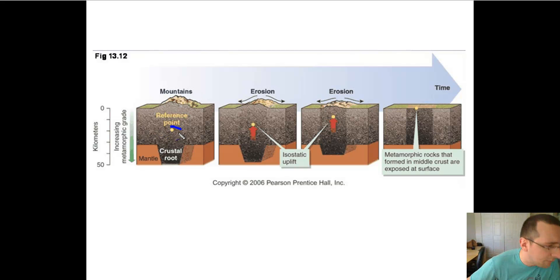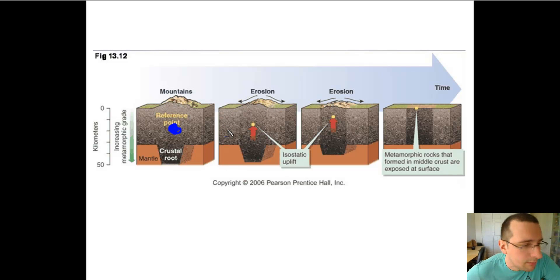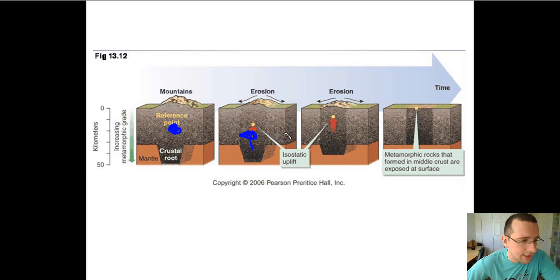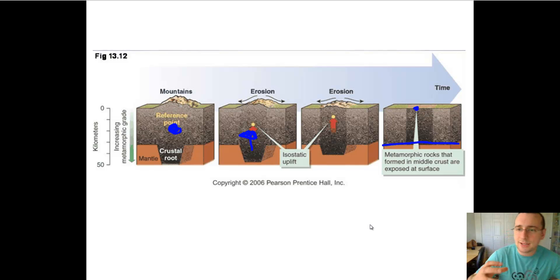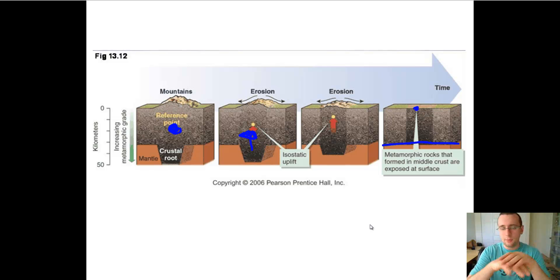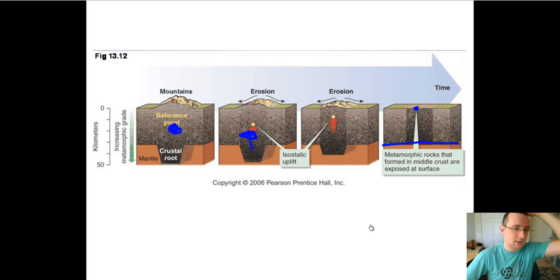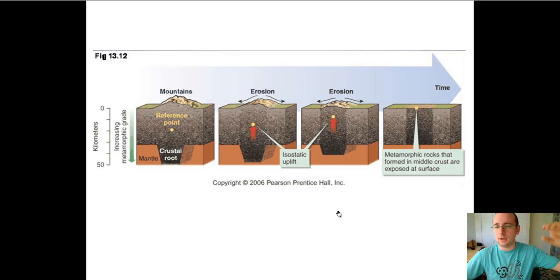If you look at a reference point in the middle of the crust where there's a mountain, and you erode that mountain removing weight, the whole crust will be uplifted because you have less weight. This isostatic uplift will drag that reference point higher and higher as it gets eroded more and more, which means the downward root disappears and the reference point that used to be in the middle of the rock will actually be exposed to the surface. That's why rocks which are deep below the ground sometimes get exposed to the surface — because of uplift following an erosion event, or because rifting makes the crust thinner and also causes uplift.